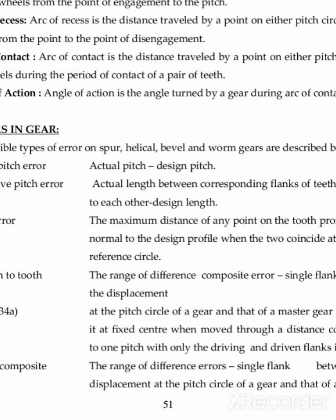We will move towards the next type of error, which is tooth composite error. These are different for single flank and double flank. For single flank tooth composite error, it is the range of difference between a displacement at the pitch circle of a gear and that of a master gear meshed with it at fixed central distance, when moved through a distance corresponding to one pitch with driving and driven flanks in contact. The total composite error is measured over one full revolution under the same conditions.